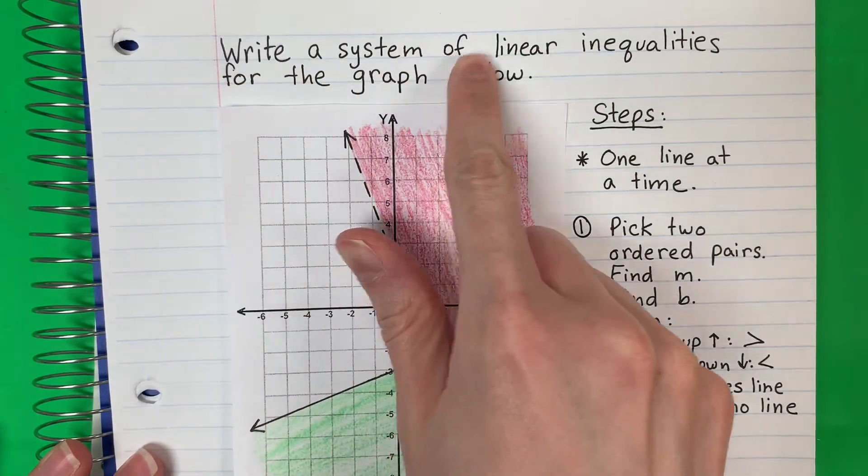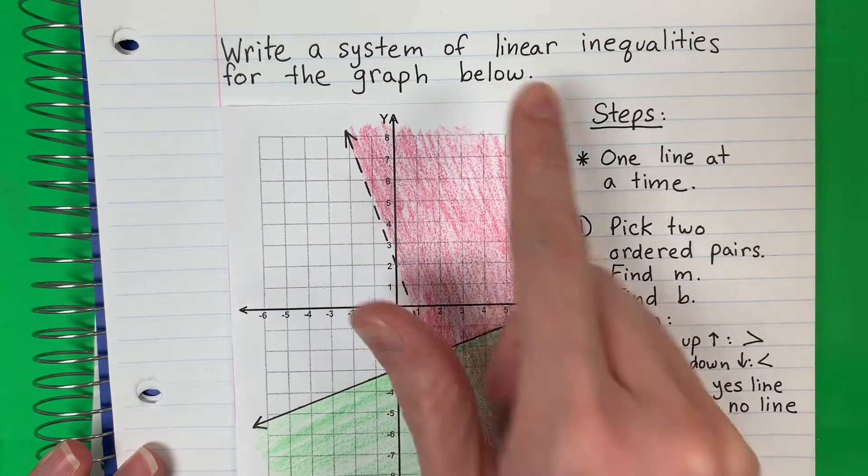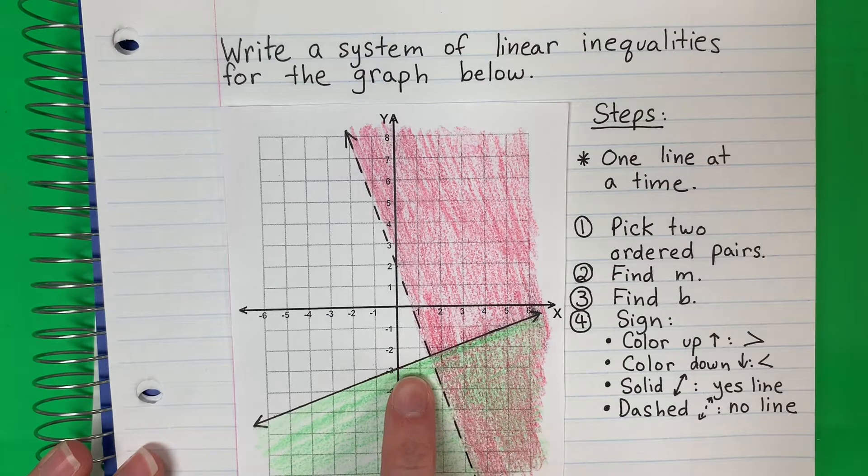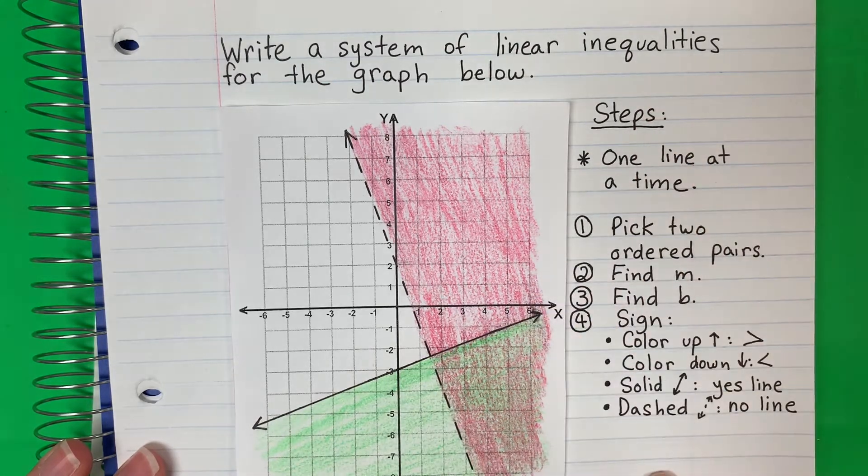Write a system of linear inequalities for the graph below. So here I have a system of linear inequalities and we are going to write an equation in slope-intercept form, y equals mx plus b. Here are the steps.